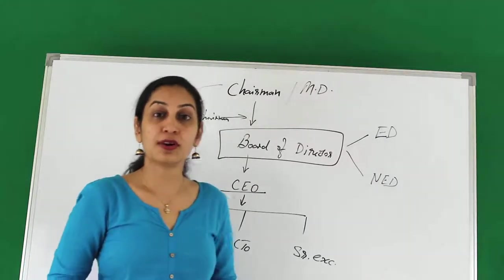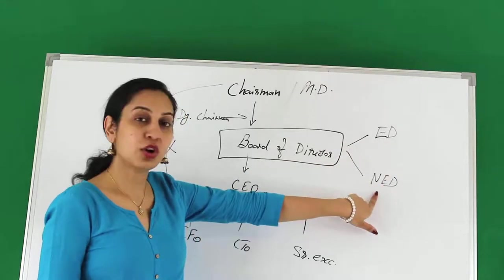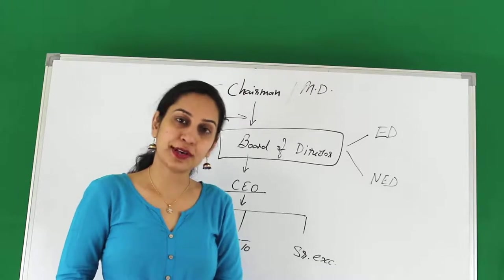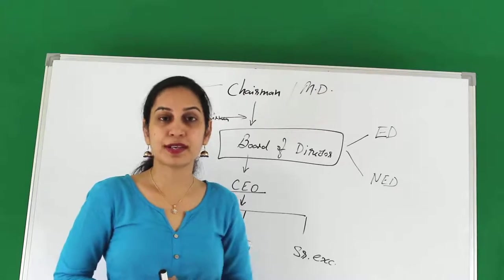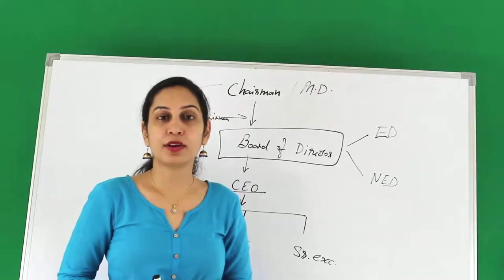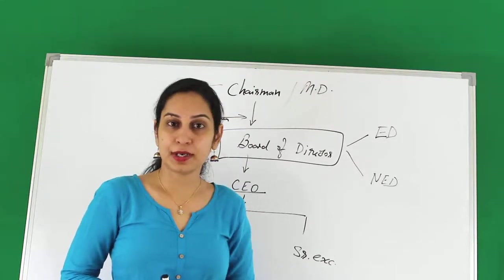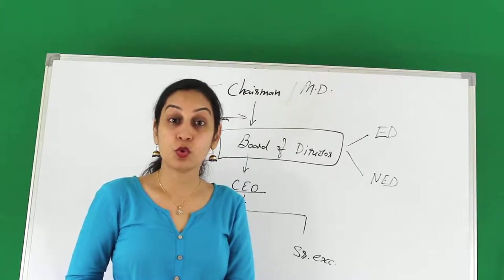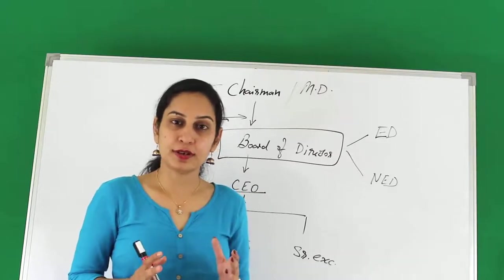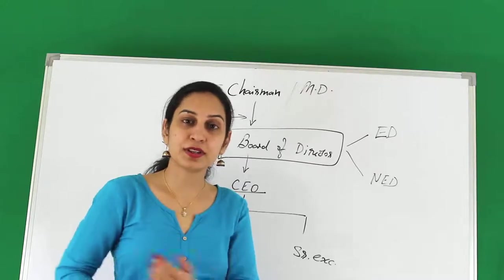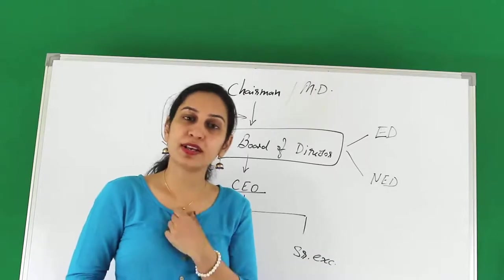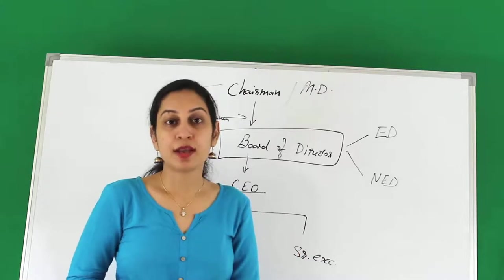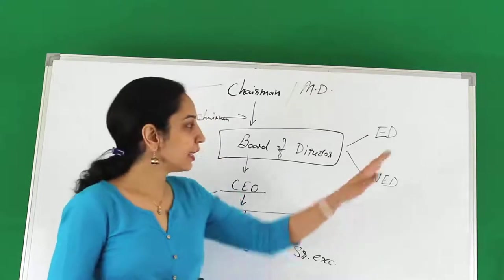NADs — Non-Executive Directors — are also called independent directors. These are highly reputed people from finance, economics, HR or other domains. Ideally, executive and non-executive directors should be equal in number on the board. NADs can serve on many companies' boards simultaneously as they don't participate in day-to-day operational decisions and do not draw a salary — they only take a per-meeting fee. This ensures they remain unbiased. Their task is to keep an eye on executive directors, maintain balance in the board, and uphold transparency. The need for NADs arises because auditors appointed by the board risk losing their independence; NADs protect auditor independence.